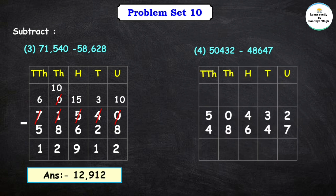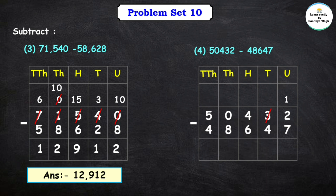Question number 4: 50,432 minus 48,647. In the units place, we have to subtract 7 from 2. We cannot subtract a bigger number from a smaller number, so we will borrow 1 ten from the 3 tens. After borrowing, the tens place becomes 2, and the units place becomes 12. 12 minus 7 gives us 5.